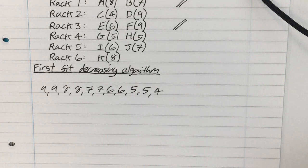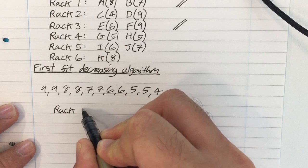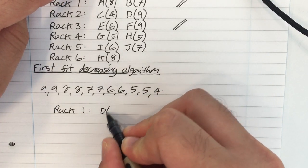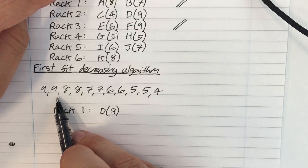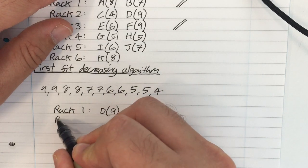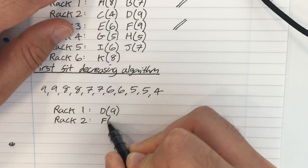And now we apply the first fit algorithm to that sorted list. So in rack 1, I'm going to put box D, which is 9. And I'm going to pick up the next biggest box, which is F, which is also 9. It won't fit in rack 1, so I've got to put it in rack 2. So F, which is 9.